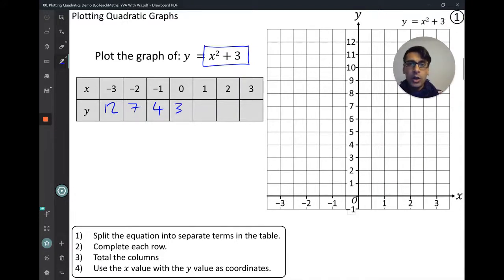1 squared is 1, 1 plus 3 is 4. Now I showed you last lesson that when you have a quadratic, it's going to be some type of u shape, which means that you will have values that will start to repeat. Once you find the minimum point of the curve, some of these values will be symmetrical. So in this case, you can actually see the 3 is going to be the lowest value here. And I'm expecting that I'm going to get a 7 here because I've got 4, 3, 4. So let's see if we get that. 2 squared is 4, 4 plus 3 is 7. So that works out. And then 3 squared is 9, 9 plus 3 is 12.